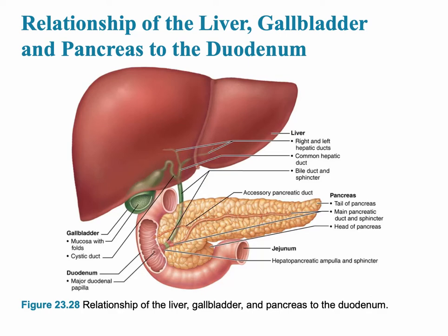The relationship of the liver, the gallbladder, and the pancreas to the duodenum — the first part of the small intestine — play a very important role in digestion.